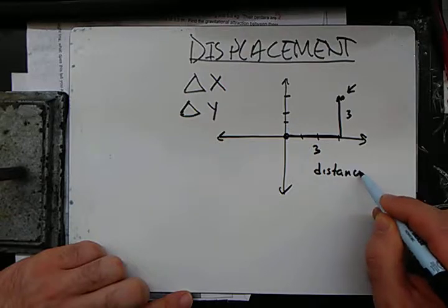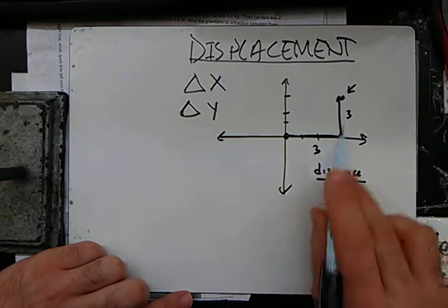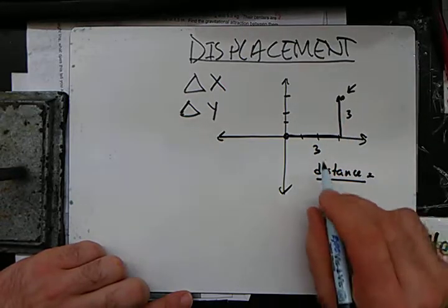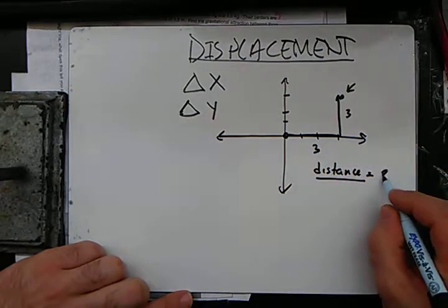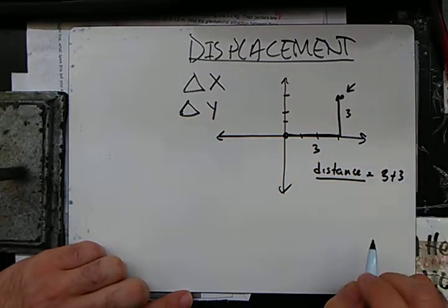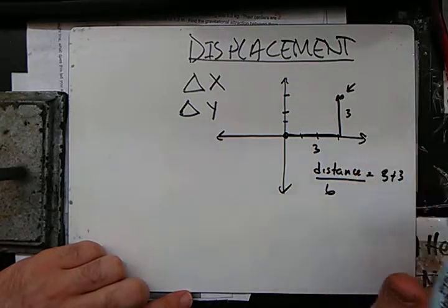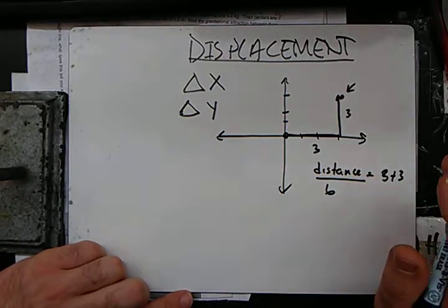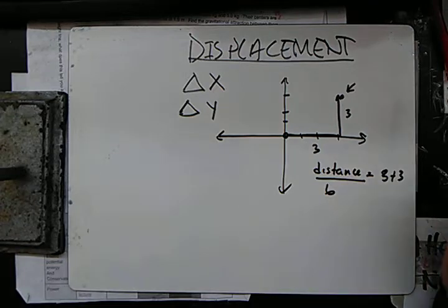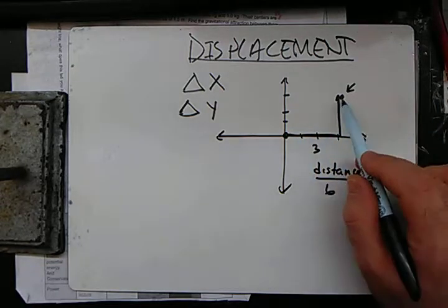Okay, so the distance, now there's a difference between distance and displacement, is the three plus the three, which is six.